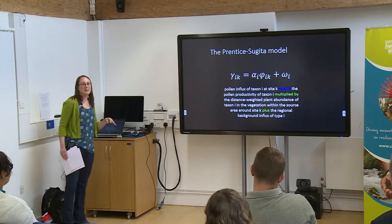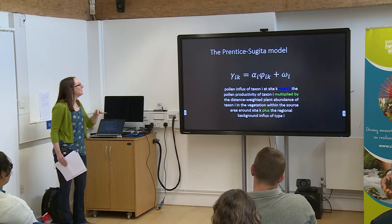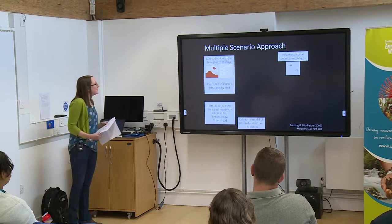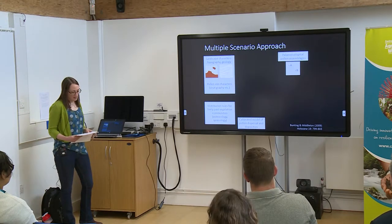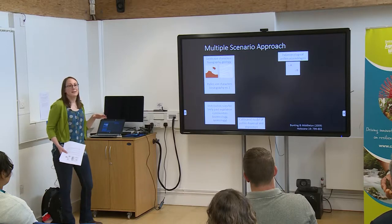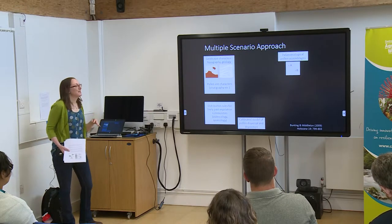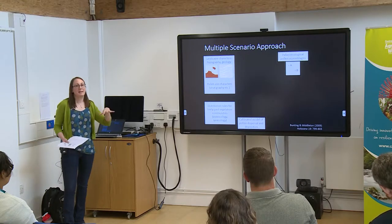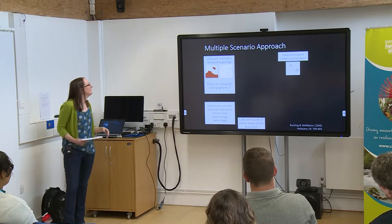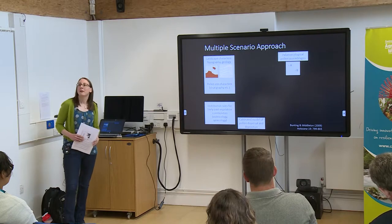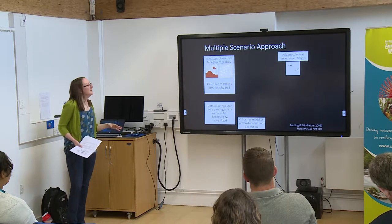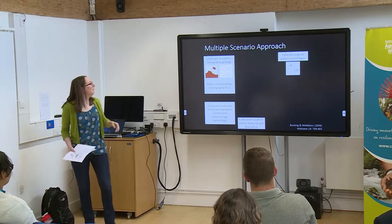There are two main approaches to reconstructing vegetation, both using this same underlying model. The one I use most is called the multiple scenario approach, and it uses the Prentiss-Sugita model to produce spatially explicit quantified reconstructions of past vegetation. The way the method works: you start with what you know about — your pollen assemblages from various sites in the landscape.